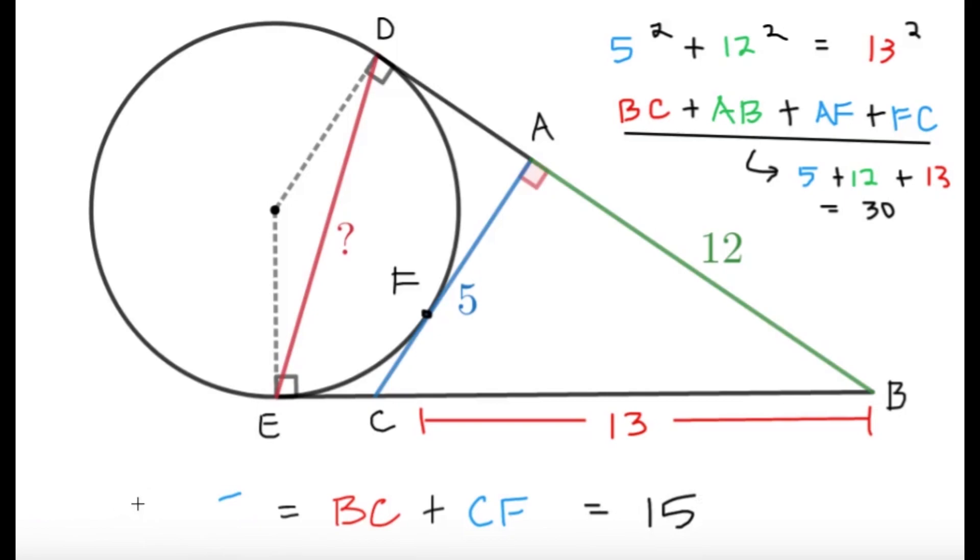So essentially, I can say that BE and BD, the two tangents, would both have a length of 15.